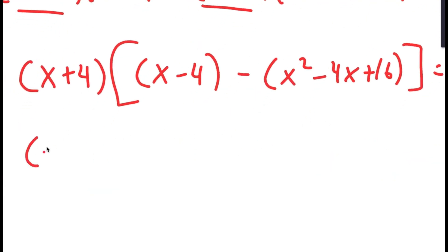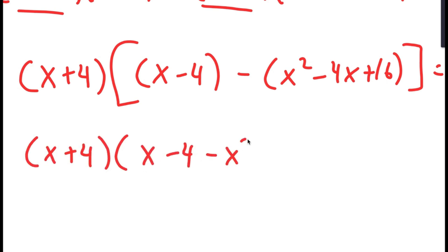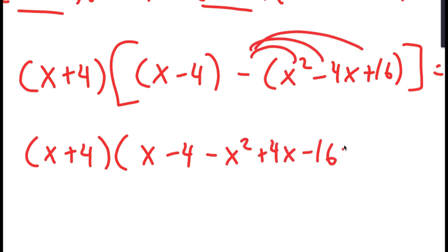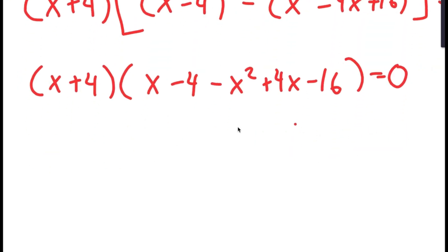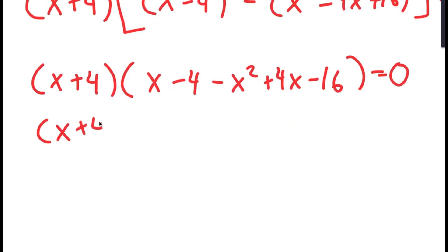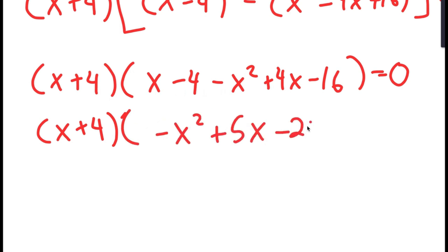Now from here, this is equal to x plus 4 times x minus 4 minus x squared plus 4x minus 16, distributing the negative sign, is equal to 0. Simplifying, I get x plus 4 times negative x squared plus 5x minus 20 is equal to 0.